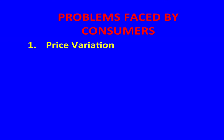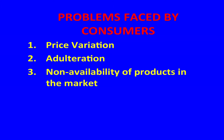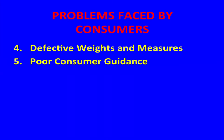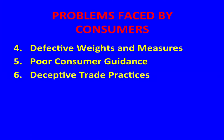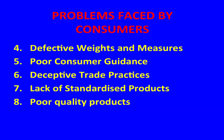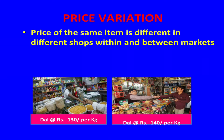We will discuss the various problems faced by consumers in a marketplace. These are: price variation, adulteration, non-availability of products in the market, hoarding and black marketing, defective weights and measures, poor consumer guidance, deceptive trade practices, lack of standardization, and poor quality products. Now we will discuss price variation.